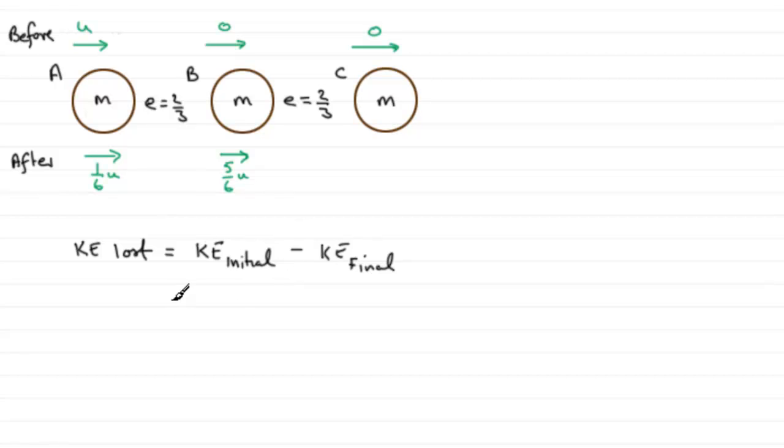Now, knowing that kinetic energy is ½mv² normally, then for the initial kinetic energy it's going to be ½ times the mass times the initial speed squared, so that's going to be U². As for B, it was stationary, so there was no initial kinetic energy from here. When it comes to the final kinetic energy though, it's going to be the sum of the kinetic energies of both A and B.